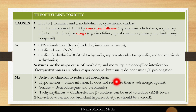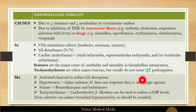For tachyarrhythmias, cardioselective beta-blockers can work because they reduce cyclic AMP levels. Non-selective beta-blockers can induce bronchial hyperactivity, so they are contraindicated — drugs like propranolol are contraindicated for the control of tachyarrhythmias in theophylline toxicity.